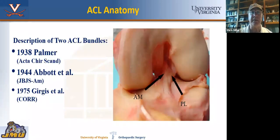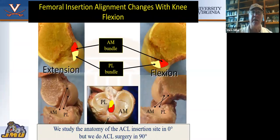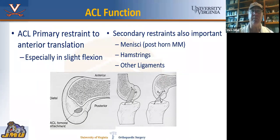The two-bundle concept has been popularized by Freddie Fu, but others have described it before him, including Palmer, Abbott, and Gurgis. So there are actually two bundles: an anterior medial and a posterior lateral. The anterior medial and posterior lateral bundles have different lengths and they have a broad insertion. We're used to looking at this as surgeons in 90 degrees of flexion. You can see where these tunnels originate and insert, both in the femur on top and the tibia on the bottom. When you go to flexion, they actually cross. The ACL is the primary restraint to anterior translation, with secondary restraints including menisci, hamstrings, and other ligaments.